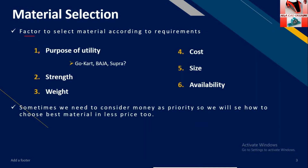These are some factors we should focus on. First, we have to think about the purpose of utility — what we are making the frame for: is it for go-kart, Baja, Formula vehicle Supra, or any other. Second, strength — according to use, we will select a range of strength that our frame should possess. Third, weight — we will find out weight according to our design. Next, cost — if we can afford moderate weight, then we can go with less cost.